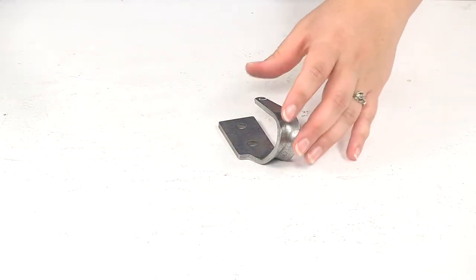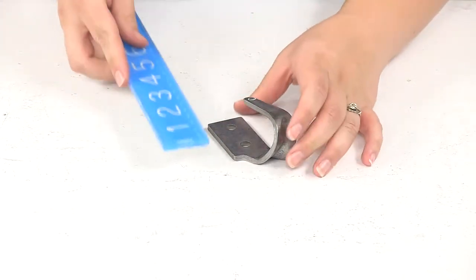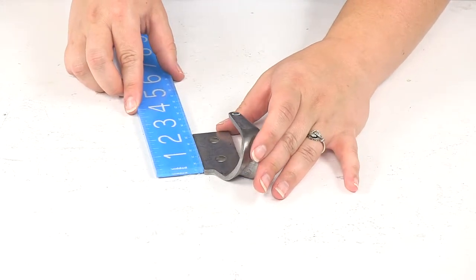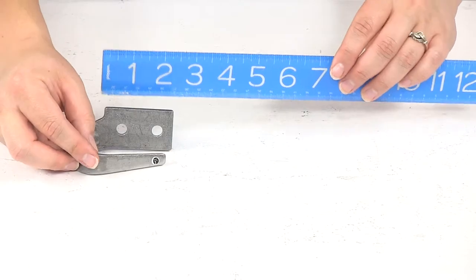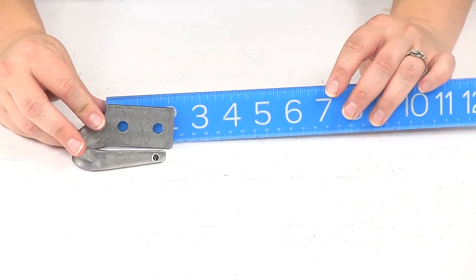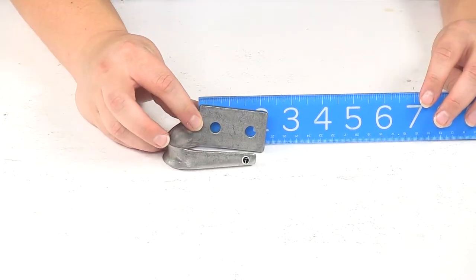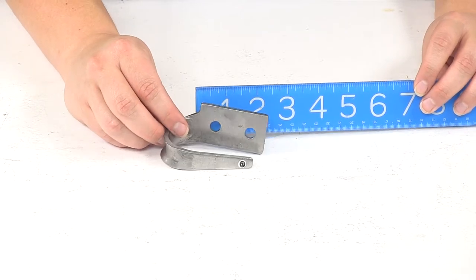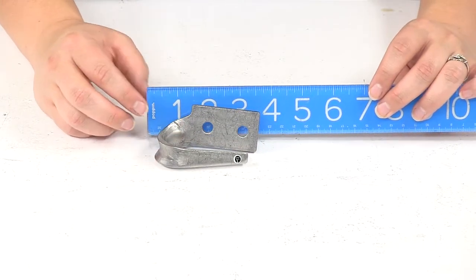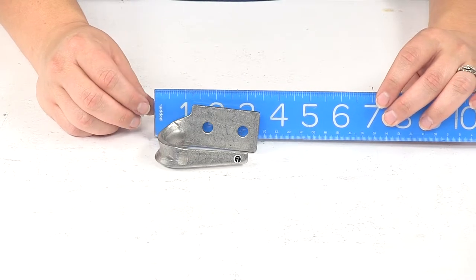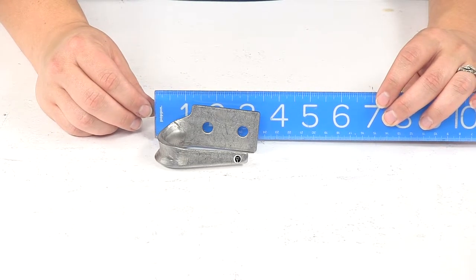As far as the dimensions on this hook, that mounting surface is going to be about two and a quarter inches. As you can see there, the overall length of the hook is going to be about three inches, three and a half.